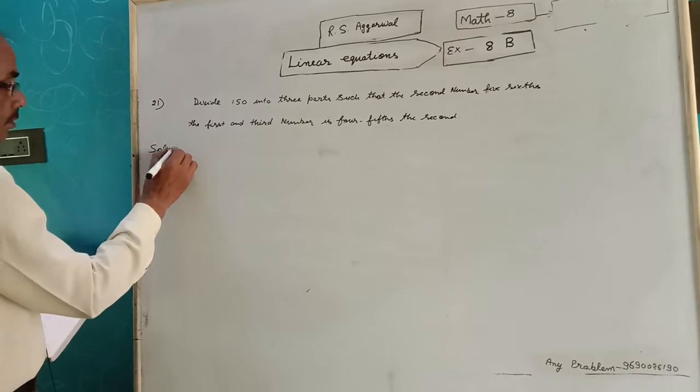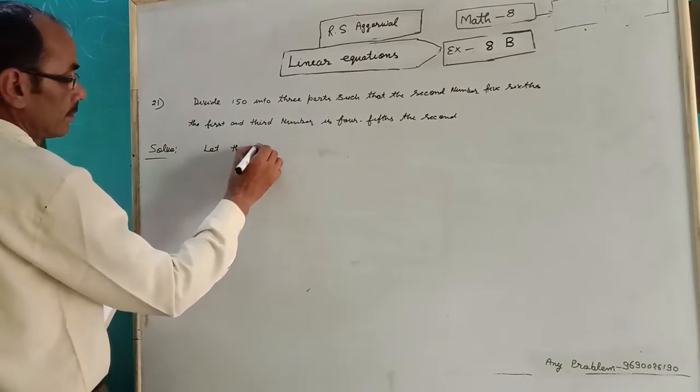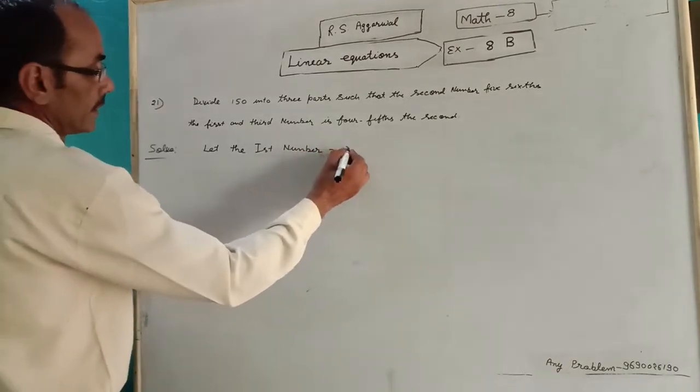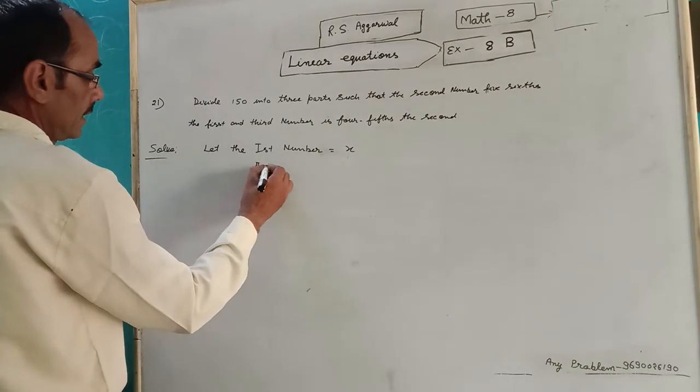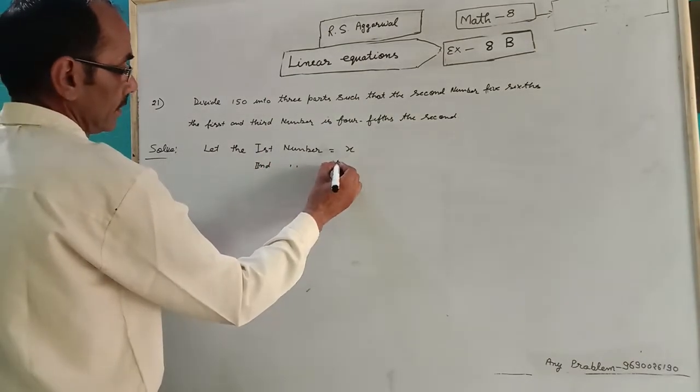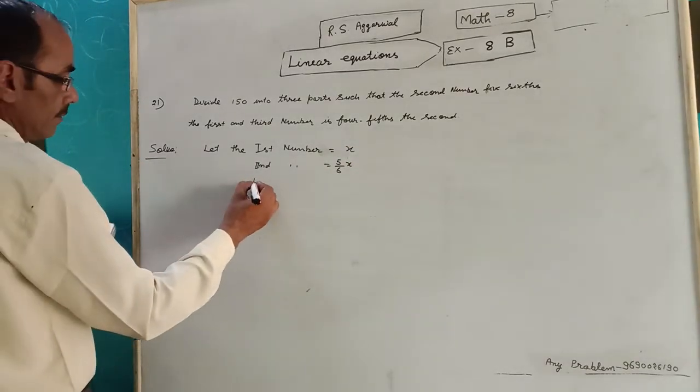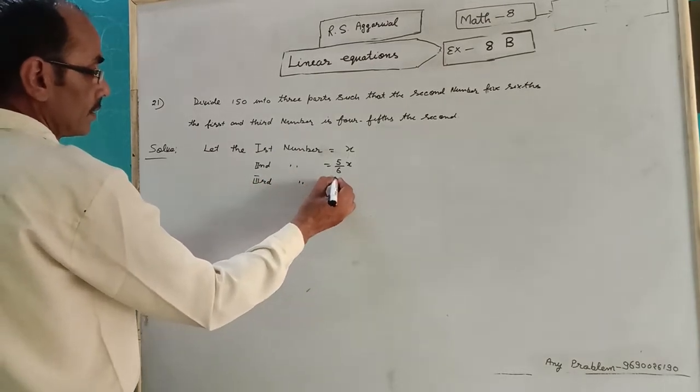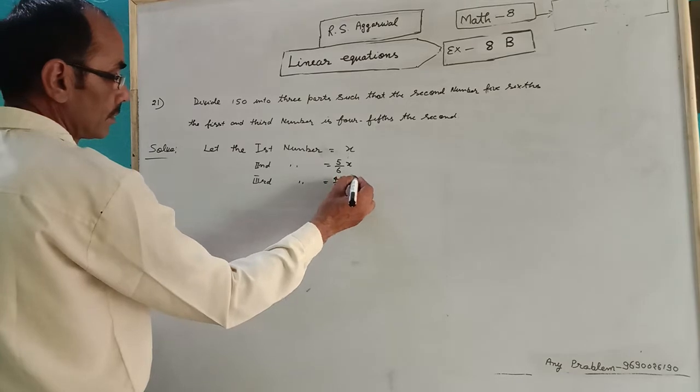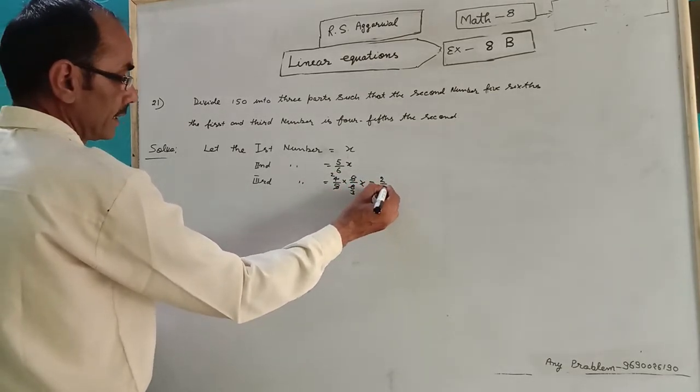Solve. Let the first number be x. The second number is 5/6, so the second number will be 5x upon 6. The third will be 4/5 of the second part. 5 divided by 5 is 2 to the 4, 2 to 3 to the 6, you can say 2 upon 3x.